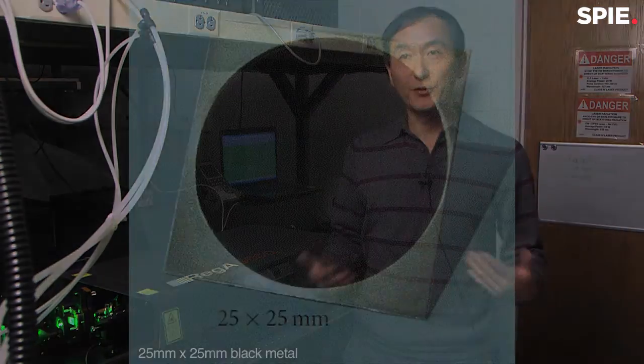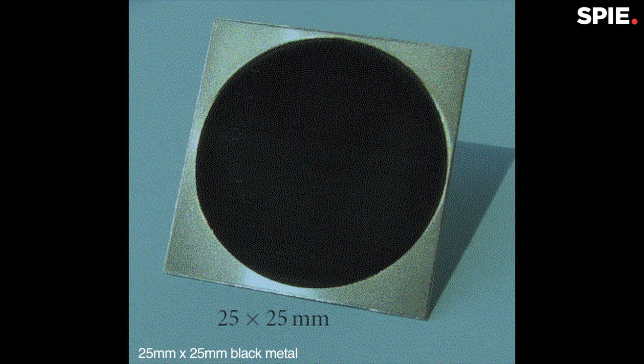The first example: we developed a technique using laser pulses to process metal surfaces. Eventually, we produce an extensive amount of micro-nano surface structures. Those structures are tiny. Even when you run your finger across the surface, it still feels smooth.